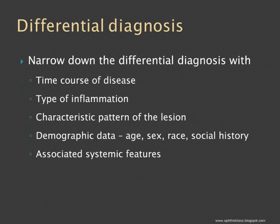One of these clues is the time course of the disease — whether it is acute, chronic, or recurrent. Second is the type of inflammation: is it granulomatous or non-granulomatous? We are not doing a histopathological examination for this; we are just looking with the slit lamp into the eye and getting clues about whether it is granulomatous or not. Then there is the characteristic pattern of the lesion.